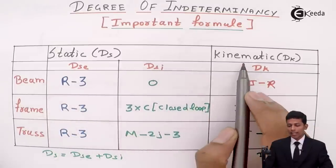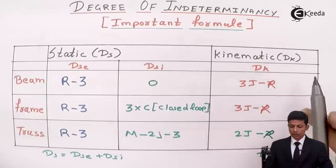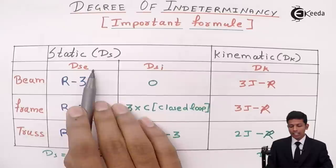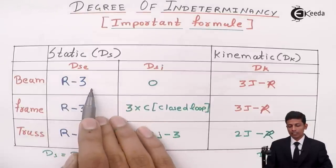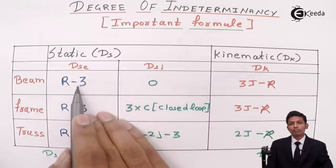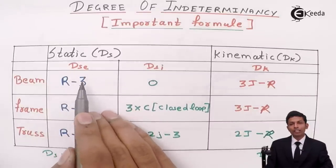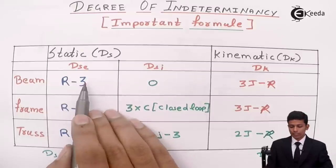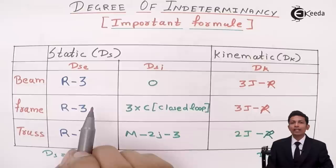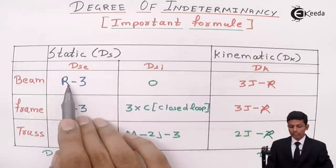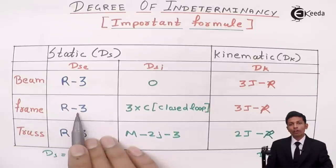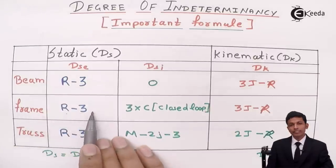In static indeterminacy we deal with DSE and DSI. DSE is external and DSI is internal. For beam and frame, the formula for DSE is r minus 3, where 3 is the condition of equilibrium — summation Fx = 0, summation Fy = 0, and moment = 0 — and r is the number of unknowns.